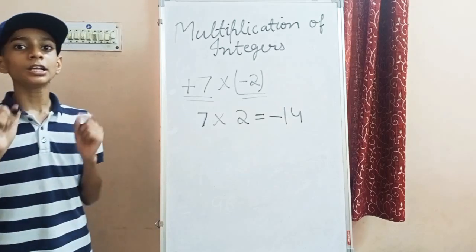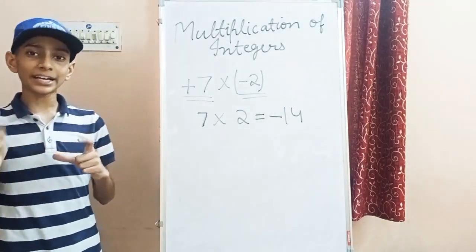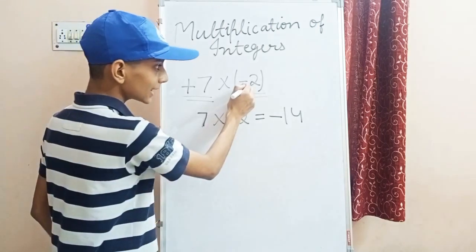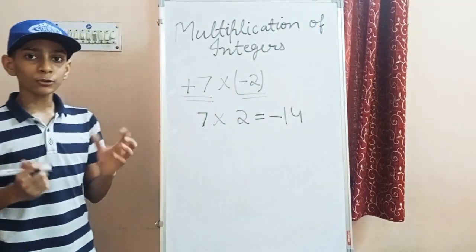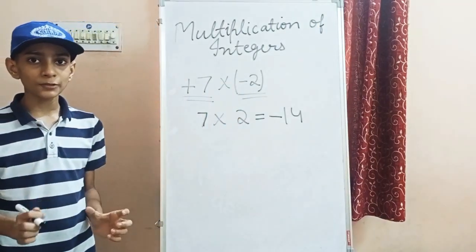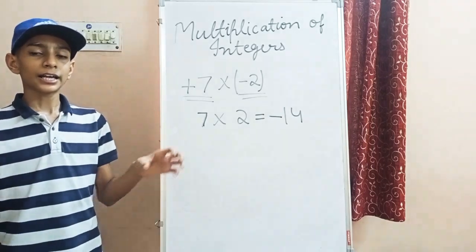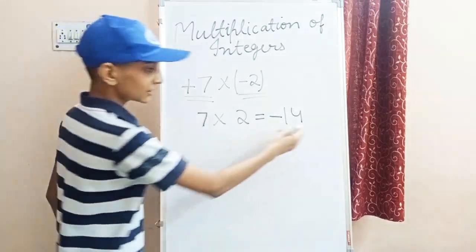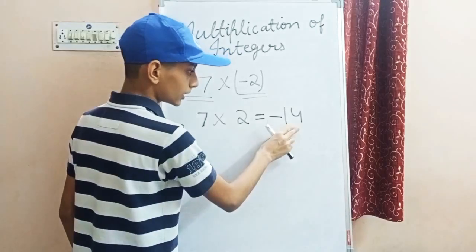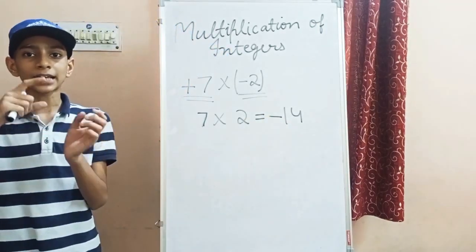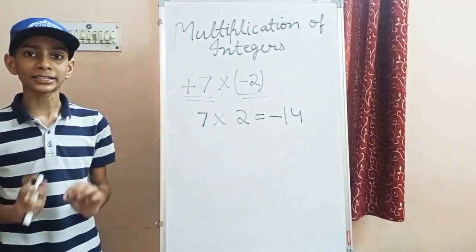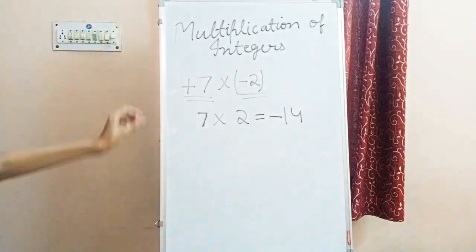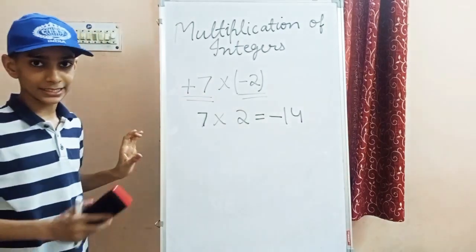So the first rule says: if we are finding out the product and there are unlike signs, take out the absolute values, multiply them — we got 14 — and then put a minus sign. We will always put a minus sign if the signs are unlike.